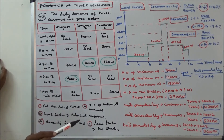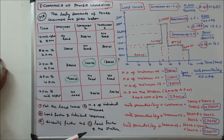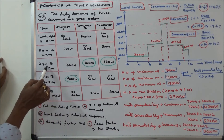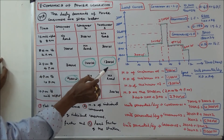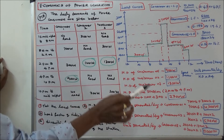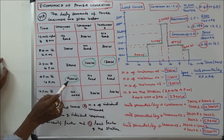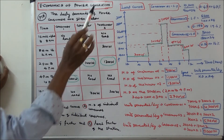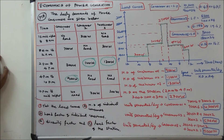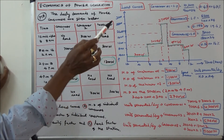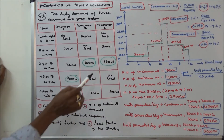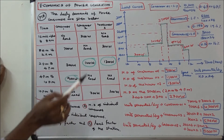Load factor equals units generated per day divided by maximum demand times 24. Maximum demand: Consumer 1 = 900 W, Consumer 2 = 1100 W, Consumer 3 = 1300 W. Load factor Consumer 1: 10,200 ÷ (900×24) = 0.47 or 47%. Load factor Consumer 2: 5,200 ÷ (1100×24) = 0.196 or 19.6%. Load factor Consumer 3: 5,000 ÷ (1300×24) = 0.16 or 16%.